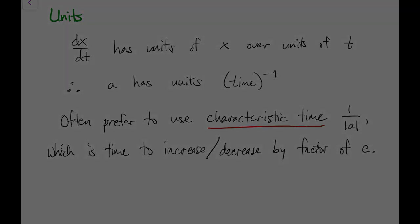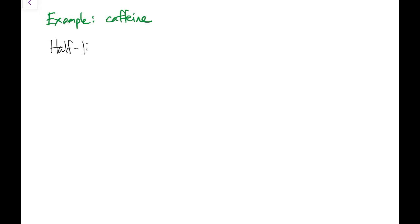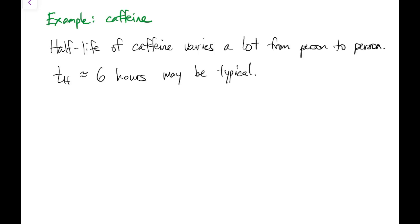So as an example from pharmacokinetics, we have caffeine. So caffeine is pretty well approximated by first order pk. And the half-life varies a lot, but six hours might be a typical value. So knowing the half-life, we could back out what a must be. So for six hours, that would be about negative 0.1 in terms of inverse hours. And then once we know a, of course, we know the entire solution whenever we want, provided we also have an initial amount.